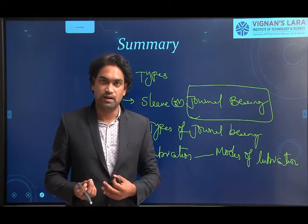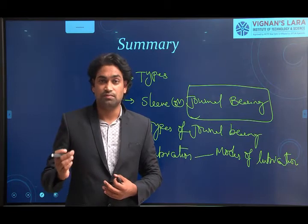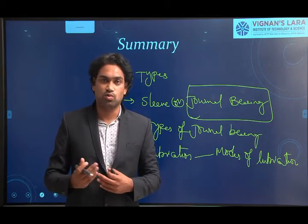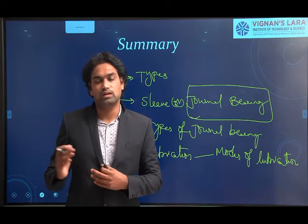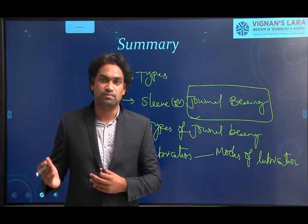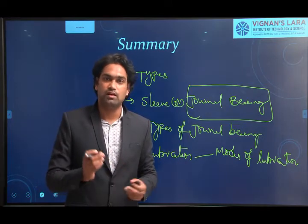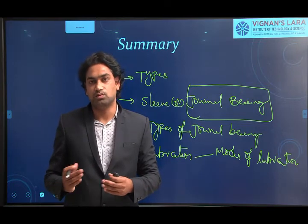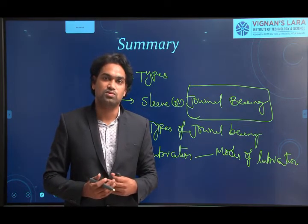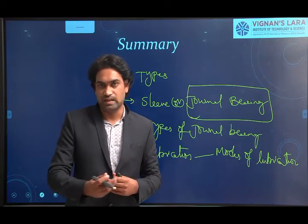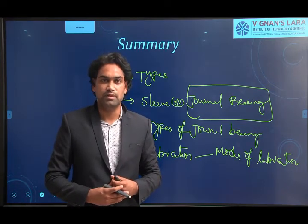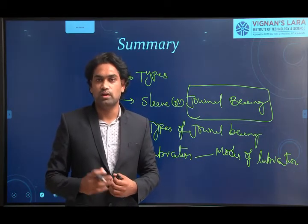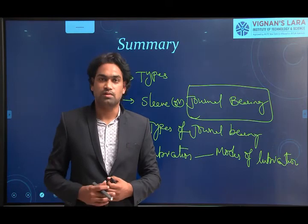In thick film lubrication, the layer of lubricant is sufficient to completely separate the two surfaces — no direct metal-to-metal contact, so no metal friction. In thin film lubrication, the layer of lubricant is present but insufficient to fully separate the surfaces, allowing partial metal-to-metal contact, so slight metal friction is present. In zero film lubrication, there is no layer of lubricant between the two surfaces.